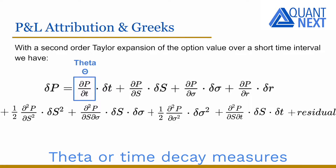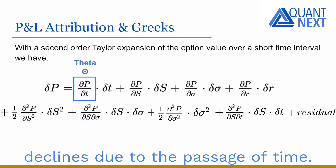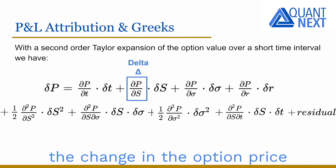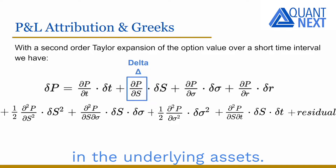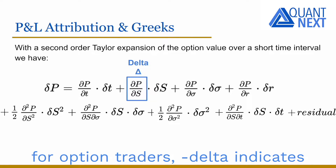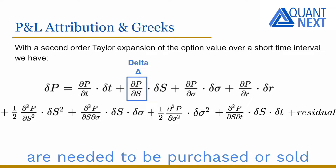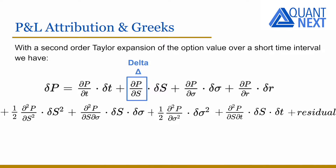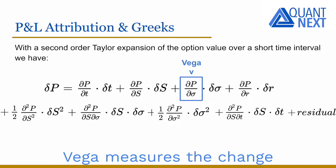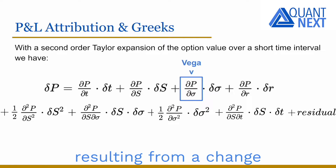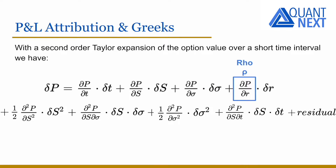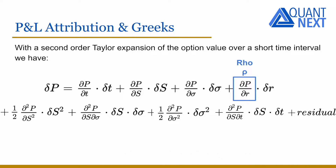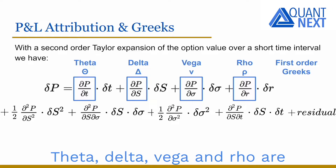Theta, or time decay, measures the rate at which the value of the option declines due to the passage of time. The delta of an option measures the change in the option price resulting from a change in the underlying asset. For option traders, minus delta indicates how many underlying assets need to be purchased or sold to hedge the directional exposure of the option position. Vega measures the change in the option's price resulting from a change in the implied volatility, and rho measures the option's sensitivity to changes in the risk-free interest rate. Theta, delta, vega, and rho are the first order Greeks.